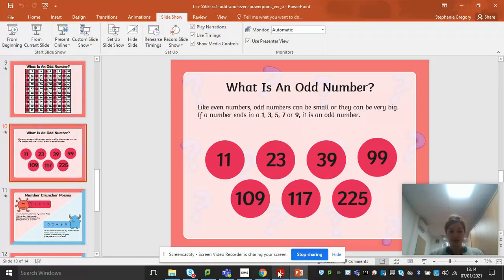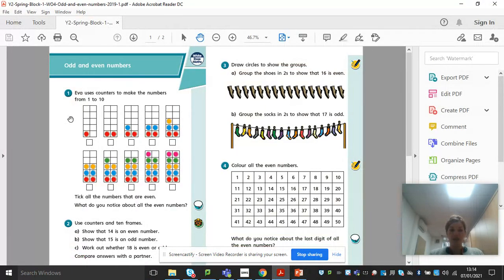So moving on to your activity for today. We've got a worksheet, which is odd and even numbers in your packs. And I would like you to have a go at completing that today. Okay, don't forget, you can upload your work to Seesaw, you can take a picture on Dojo, or you can just leave it in your packs, hand it in when you collect your next pack of work, and I will mark and return that for you.